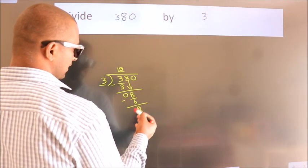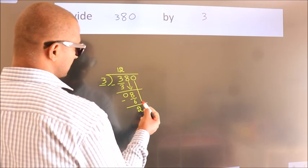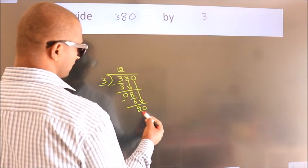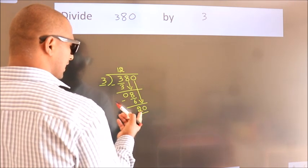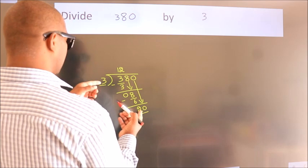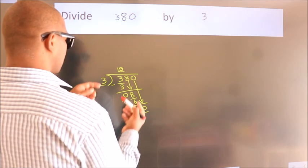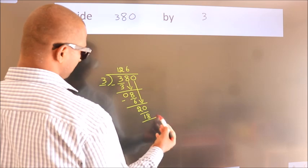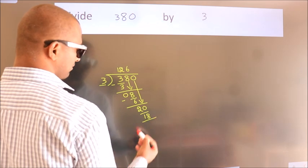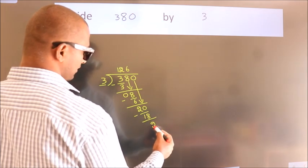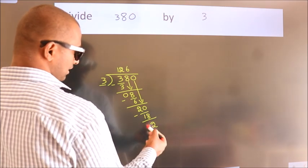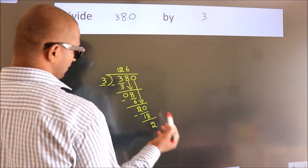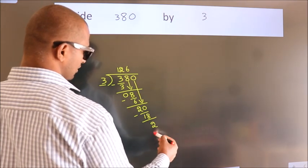After this, bring down the beside number. So 0 down, so 20. A number close to 20 in the 3 table is 18. Now we subtract. We get 2. After this, no more numbers to bring down, so we stop here.